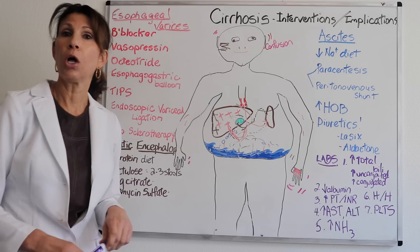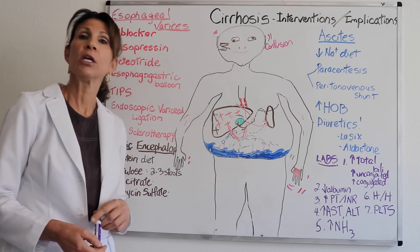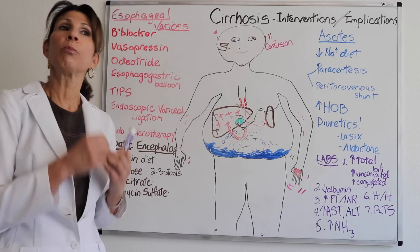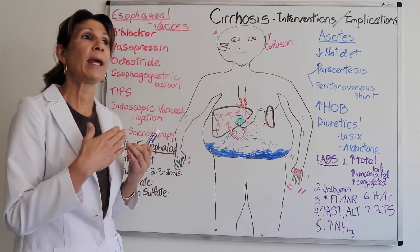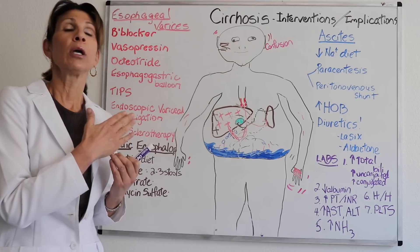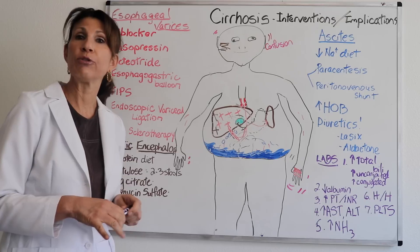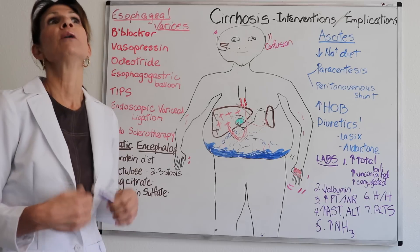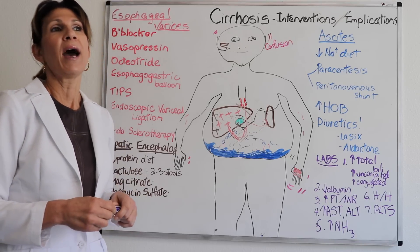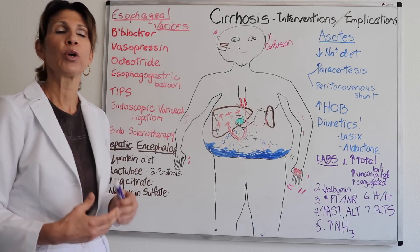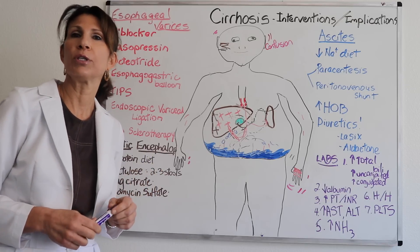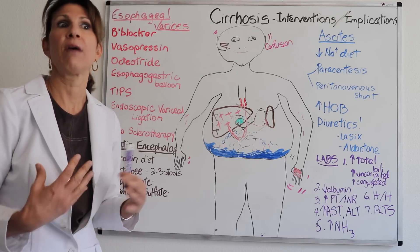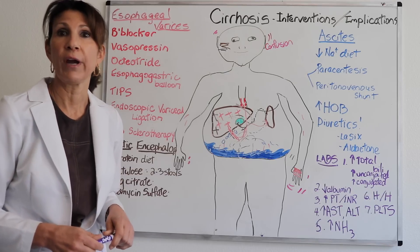The TIPS procedure — trans-hepatic intra-portal systemic shunting — is a shunt placed from the portal vein into the hepatic vein, bypassing the liver completely. It decreases pressures in the portal system, but you run the risk of hepatic encephalopathy getting worse, since all toxins from portal circulation go right into the central circulation. It's a stopgap measure for patients with refractory bleeding esophageal varices.